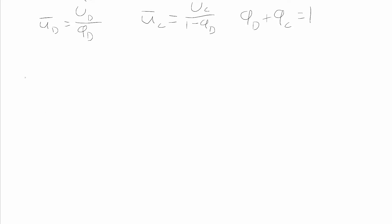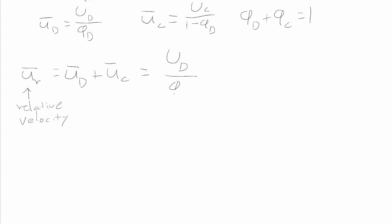The relative velocity of the two phases, U_R bar, is equal to the sum of the differential element velocities: u_D bar plus u_C bar. Relating this to the superficial velocities, the relative velocity equals U_D over phi_d plus U_C over (one minus phi_d).